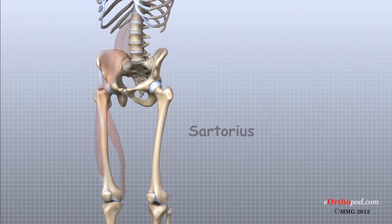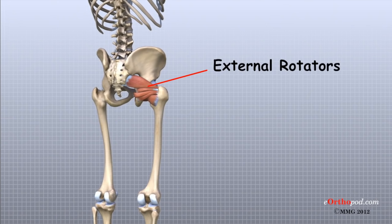Several small muscles travel from inside the pelvis across the back of the hip joint and attach to the back of the upper femur. These muscles help to stabilize the hip joint and rotate the leg outwards. Together, as a group, these muscles are called the external rotators of the hip.